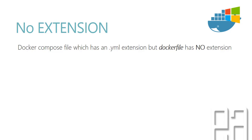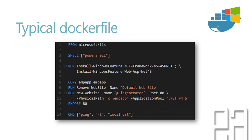A Docker Compose file has a .yml extension, but a Docker file has no extension — it's just a plain text file with no extension, kind of unnamed. You can create a very simple plain text file. It has some indentations of course, and it is more like the Docker Compose file in structure.